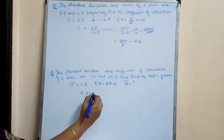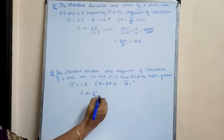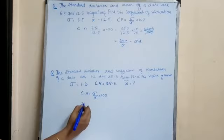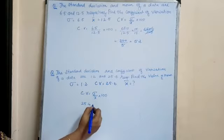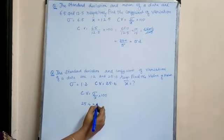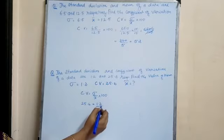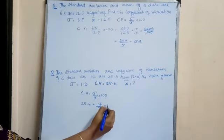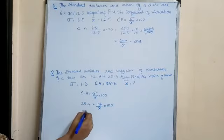CV is sigma by x bar into 100. So CV value is 25.6. Sigma is 1.2 by x bar into 100. Bringing x bar to this side.